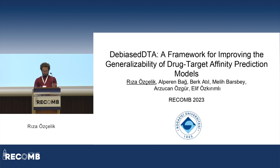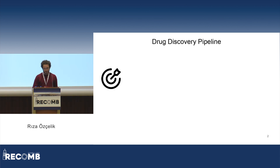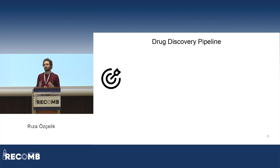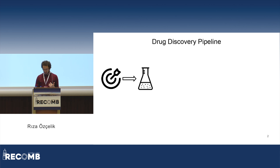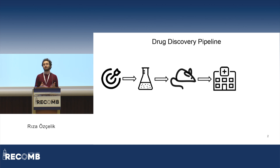It all comes down to the drug discovery pipeline. A typical drug discovery pipeline starts with target identification, where researchers identify — often a protein target — whose modulation would hopefully cure a disease. Once you have your target, you start finding some promising chemicals that would strongly bind to that target and modulate its behavior.